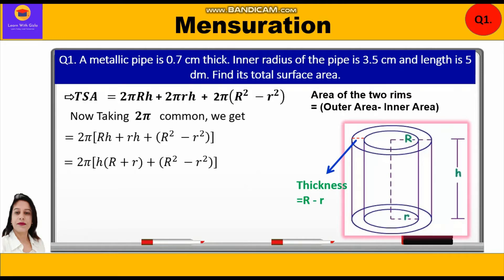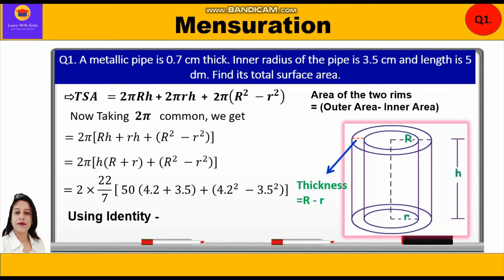Now we substitute the values: 2 × (22/7) × [50 × (4.2 + 3.5) + (4.2² − 3.5²)]. We solve 4.2² − 3.5² using the identity a² − b² = (a + b)(a − b).